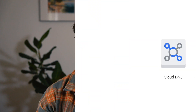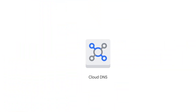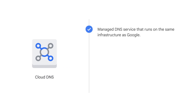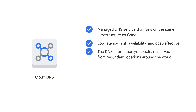But what about the internet hostnames and addresses of applications built in Google Cloud? Google Cloud offers Cloud DNS to help the world find them. Cloud DNS is a managed DNS service that runs on the same infrastructure as Google. It has low latency and high availability, and it's a cost-effective way to make your applications and services available to your users. The DNS information you publish is served from redundant locations around the world.